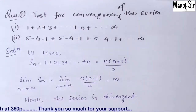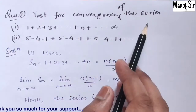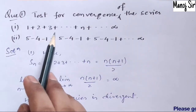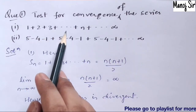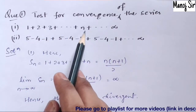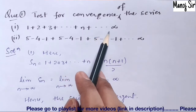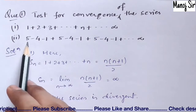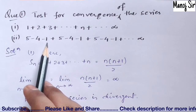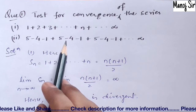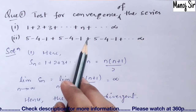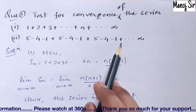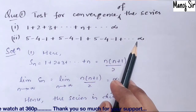The first series is 1 + 2 + 3 + … + n + … up to infinity. The second series is 5 − 4 − 1 + 5 − 4 − 1 + 5 − 4 − 1 + … and so on.